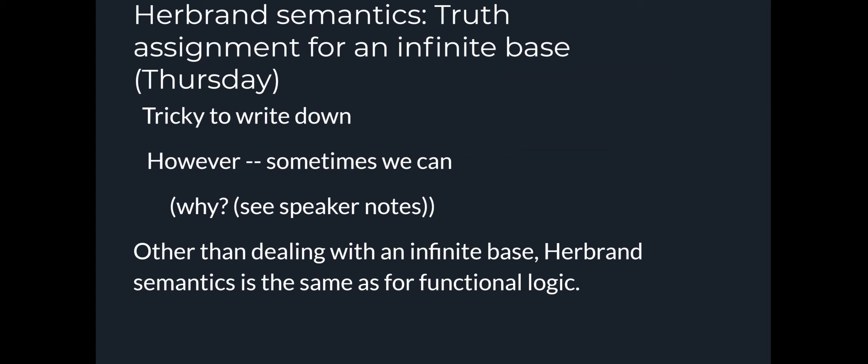And so a truth assignment on an infinite base has to happen. And that's difficult to write down. But sometimes we can. And I can tell you from the speaker notes, an example is where you know that there's a finite number of the assignments will be either true or false. You could write down those and then say all the rest are false or the other way around.